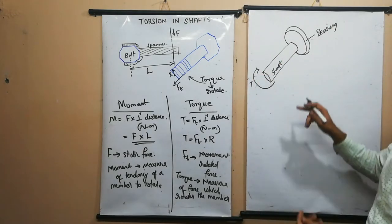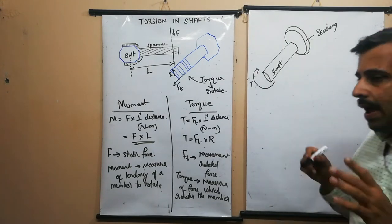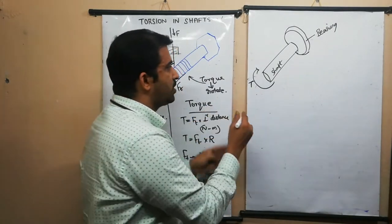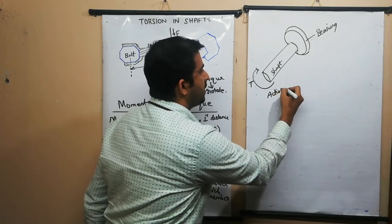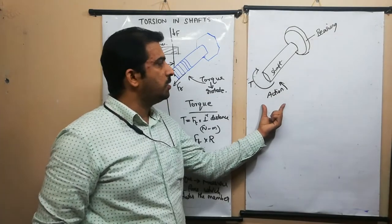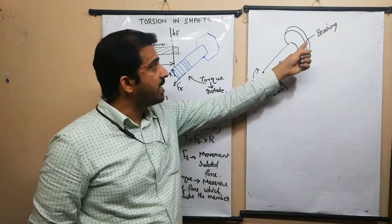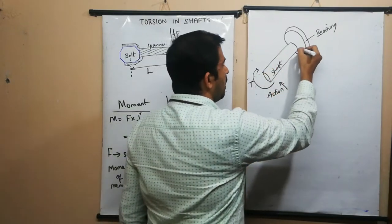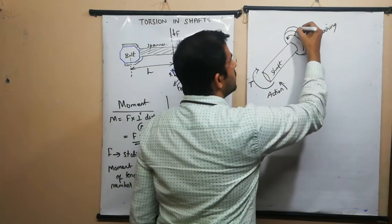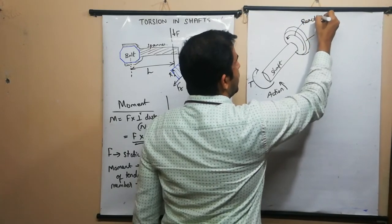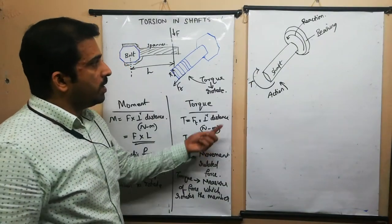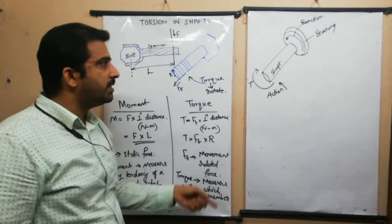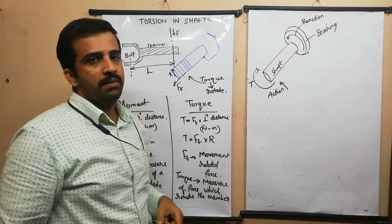At the time of applying the torque, we perform an action on the shaft. According to Newton's law, there will be a reaction — which comes from the bearing. If we apply torque in the clockwise direction, the bearing produces an anti-clockwise reaction. For the shaft to rotate continuously inside the bearing, this action must overcome that reaction.